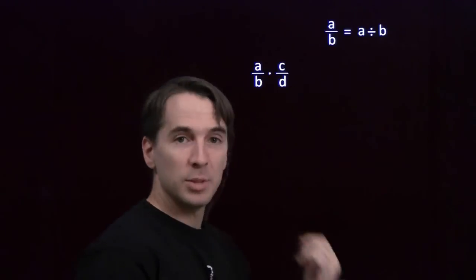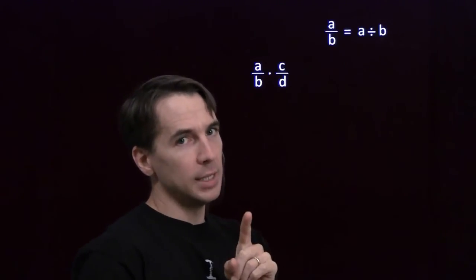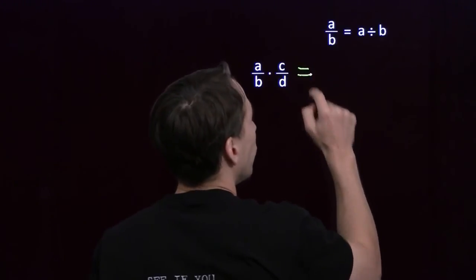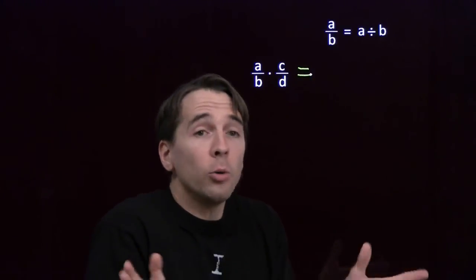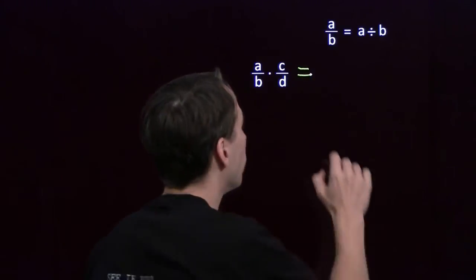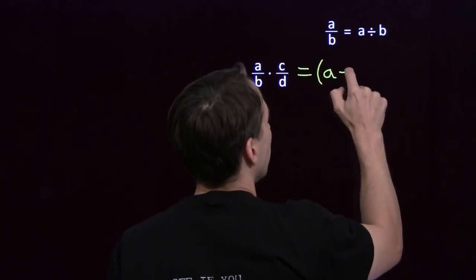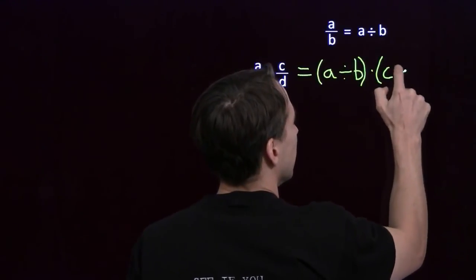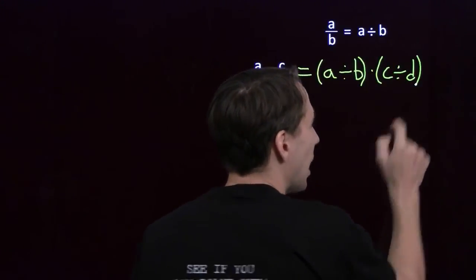We'll take any fraction here, A over B times C over D. B and D can't be 0, no dividing by 0. And we'll do the same thing we did before. All we're doing is this really isn't anything new. We're just using our division and multiplication rules. Write this as A divided by B times C divided by D.